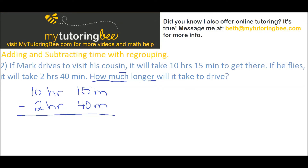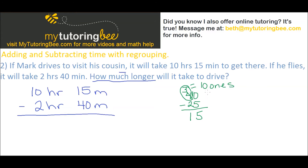Looking at our minutes, 15 minutes is not enough to take away 40 minutes, so we have to regroup. Think of it like a normal subtraction problem — for example, 40 minus 25. In the ones place we don't have enough ones to take away 5, so we have to take from the tens and give to the ones. When I take away that 1 from the tens, I'm really taking away 10 ones, which I give to the ones place so I have enough to subtract.